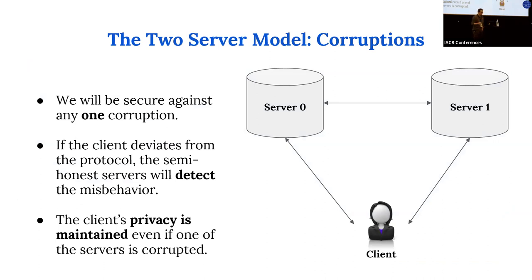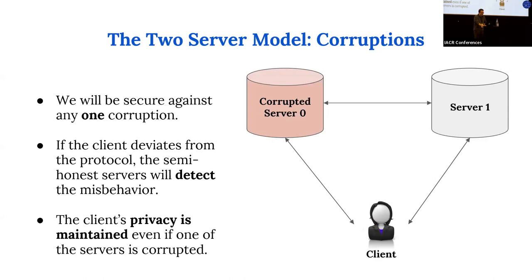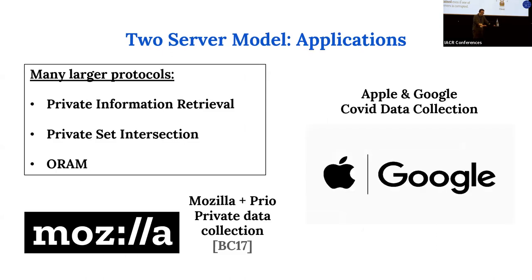In terms of malicious security, we can handle the malicious corruption of any one of these three parties. In particular, if a client tries to send a malformed function secret share, the servers will catch the client. And if one of the servers is corrupted, the client's privacy is maintained.